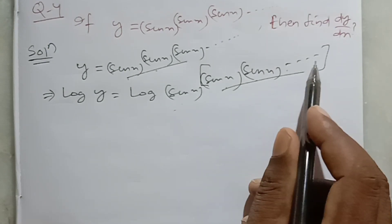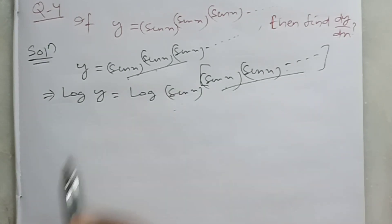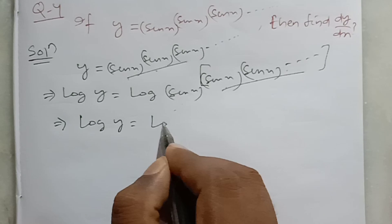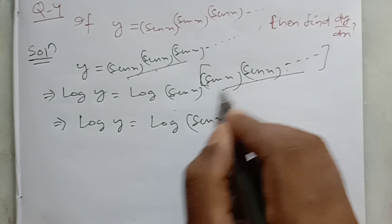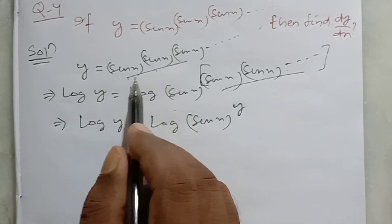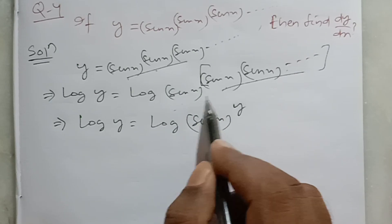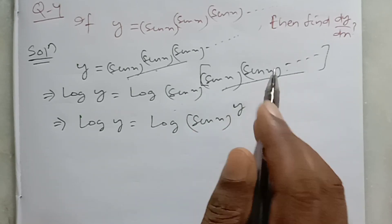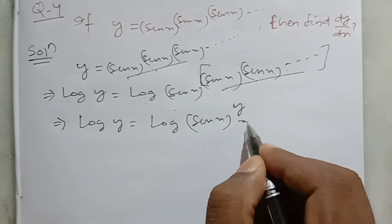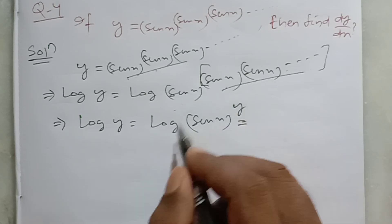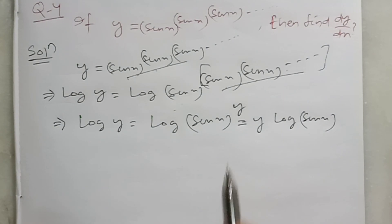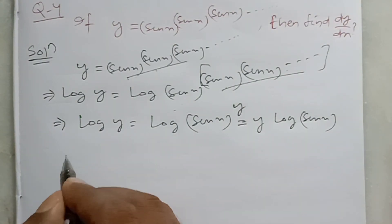Since sine x to the power sine x to the power sine x up to infinite number of times is itself y, we can write: log y is equal to log sine x to the power y. Because the exponent — which is sine x repeated infinitely — is y itself. And infinite minus one is still infinite, so the exponent is y.